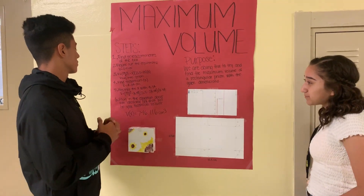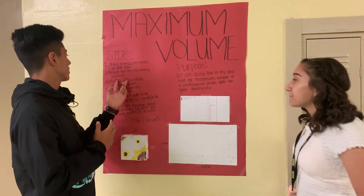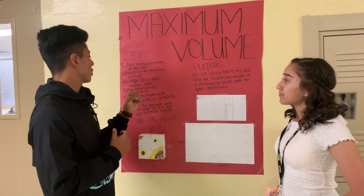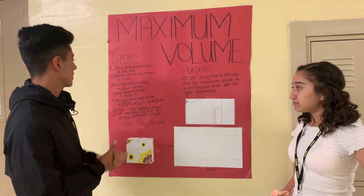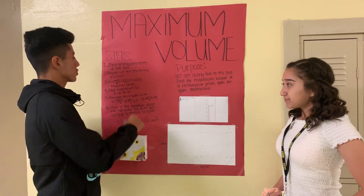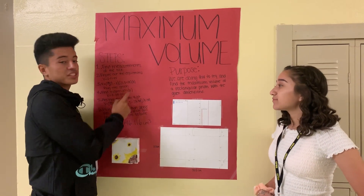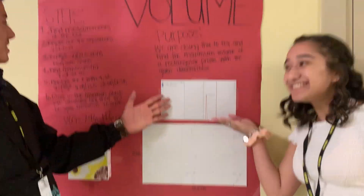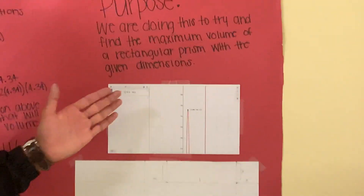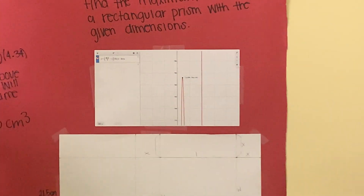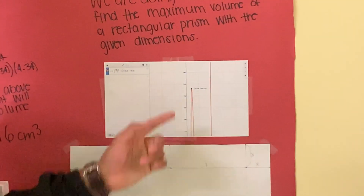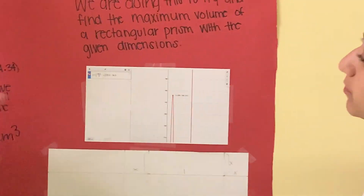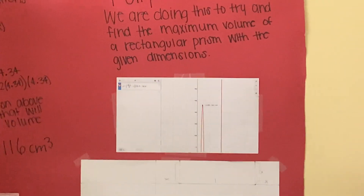We've already found the length and the width, so all we have to do is find the height. We plug this into the graphing calculator. As you can see here, we plug it in and it gave us the maximum of 4.34.